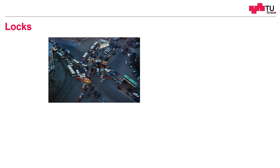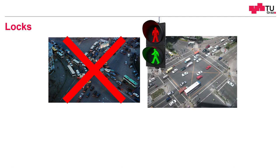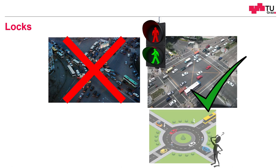To illustrate locks, think of a crossroads as a common resource and the cars as our threads. If we don't use a lock, it could happen that they all access the resource at the same time and we have a problem — this doesn't work. So let's introduce a traffic light as a lock; then it works, although some cars have to wait. This works, but are there other solutions?